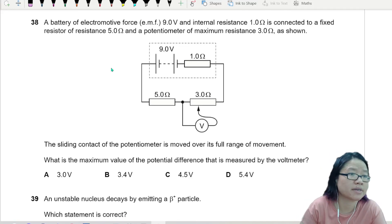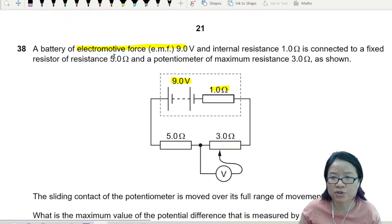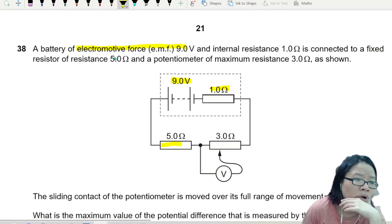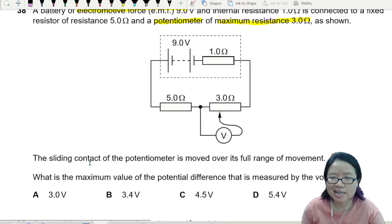Okay, this question has a battery with EMF 9 volts and internal resistance 1 ohm. It is connected to a fixed resistor of resistance 5 ohms, and then you have a potentiometer of maximum resistance 3 ohms.